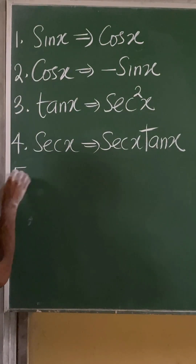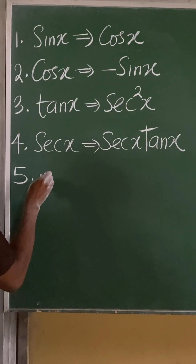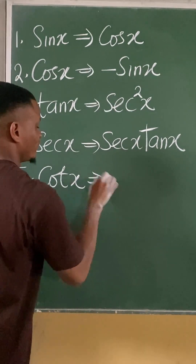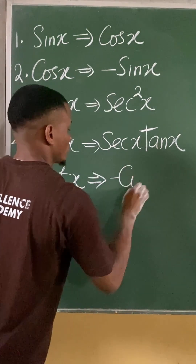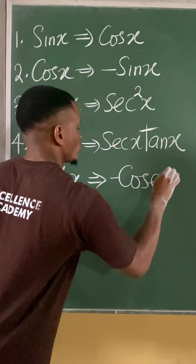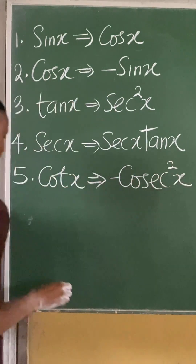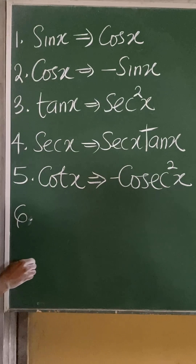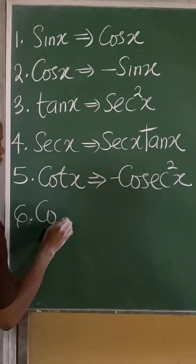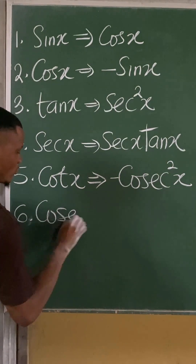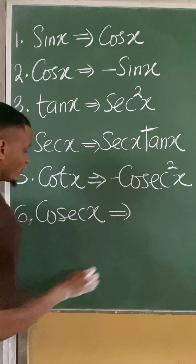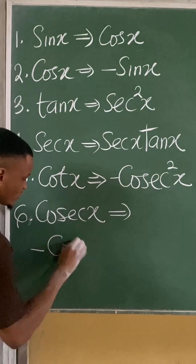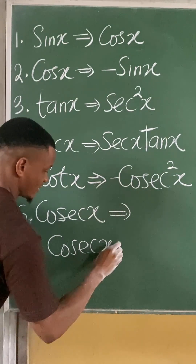Number five, if I differentiate cot x, I will have minus cosec squared x. Finally, number six, if I differentiate cosec x, what I will get would be minus cosec x cot x.